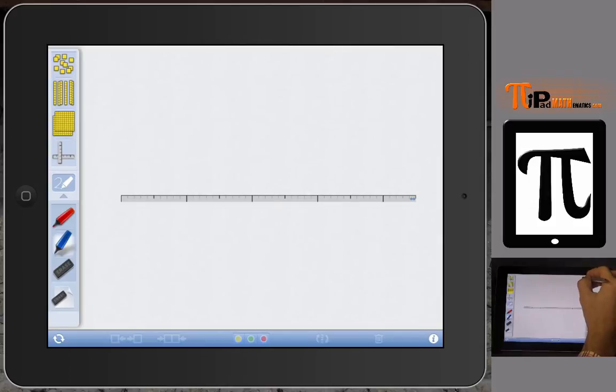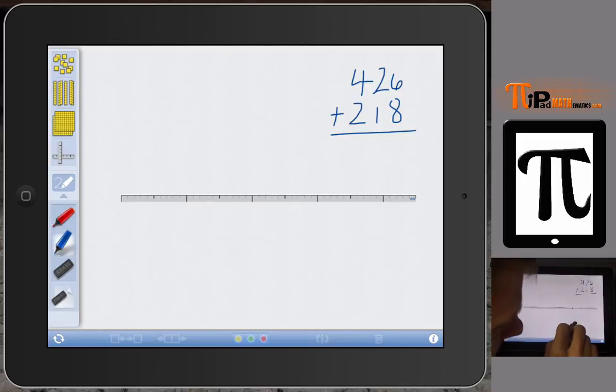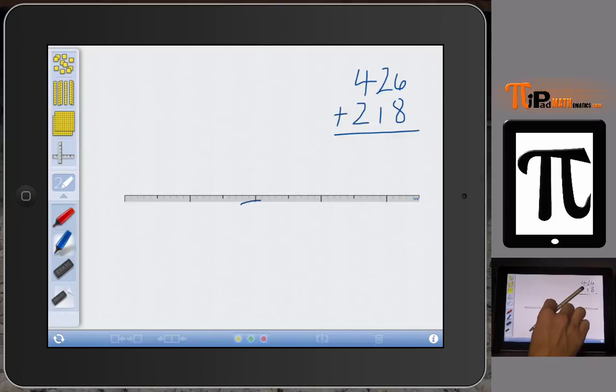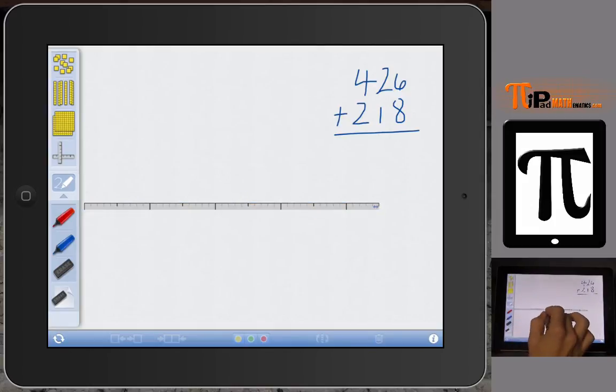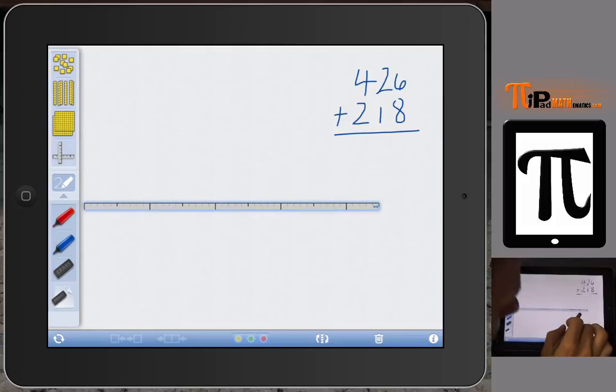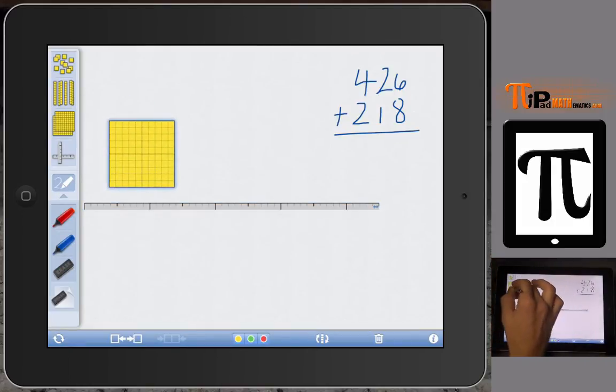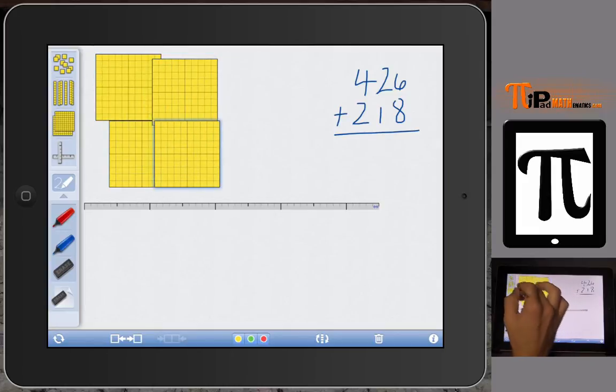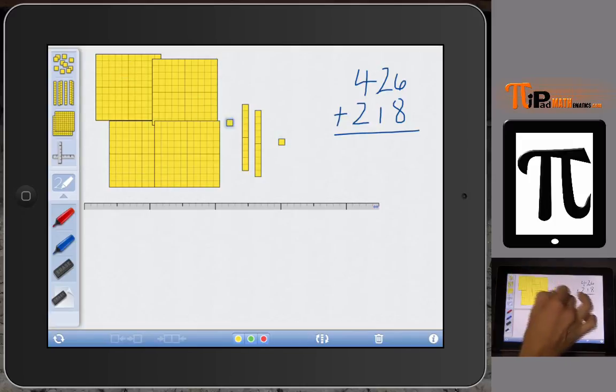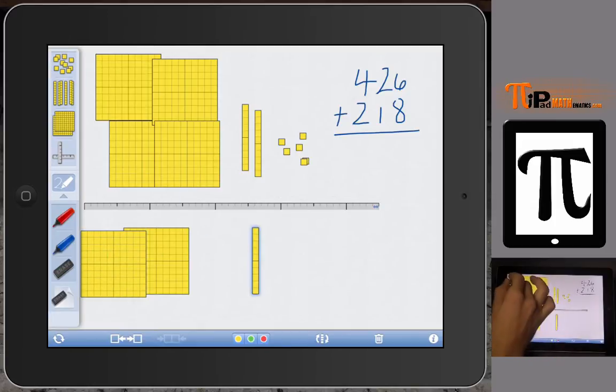I'm going to start by modeling 426 plus 218. I'm going to narrow the field a little bit and move this over. Above this horizontal line, I'm going to model 426. Below it, I'm going to model 218. The students will be able to see the difference. I have 400, 1, 2, 3, 4, and then 20 and 6. I have 426 modeled above my horizontal bar and I have 218 modeled below the horizontal bar.